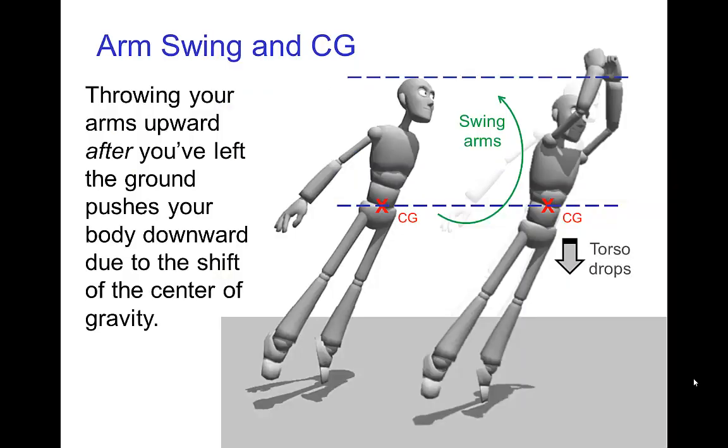What happens is if you throw your arms upward after you left the ground, that shift of the center of gravity as it's located in your body, the center of gravity shifts to a higher position in your body, but the center of gravity is the same distance from the ground. Basically that means that you throw your body downward, so your torso, your body will shift downward by the action of swinging the arms upward.